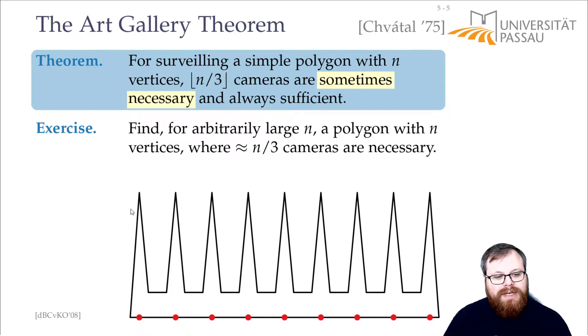And how many corners do we have? For the first spike, we can count three. For the second one, three. Then again, three. And for the last one, we again count three. So we have n over three spikes, and that means we need exactly n over three cameras to cover it.